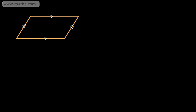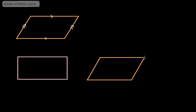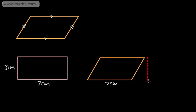I'm going to draw a rectangle here, and next to it I'm going to draw a parallelogram with the same base length and the same perpendicular height. When we talk about the perpendicular height, we mean the straight-up height — not the slant height of the side. This length is going to be three centimeters, and this one is going to be seven centimeters, so a base of seven centimeters and a perpendicular height of three centimeters.